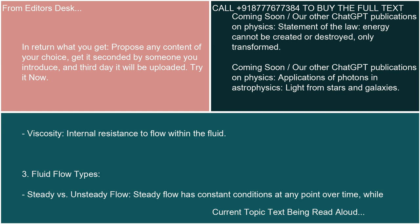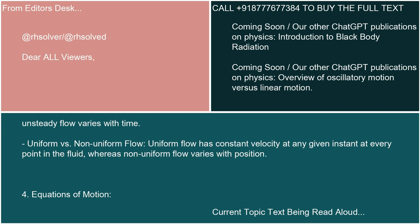3. Fluid Flow Types. Steady vs. Unsteady Flow: steady flow has constant conditions at any point over time, while unsteady flow varies with time. Uniform vs. Non-uniform Flow: uniform flow has constant velocity at any given instant at every point in the fluid, whereas non-uniform flow varies with position.